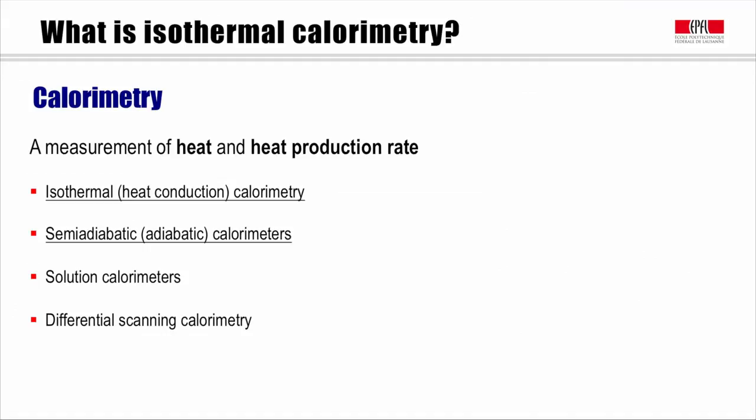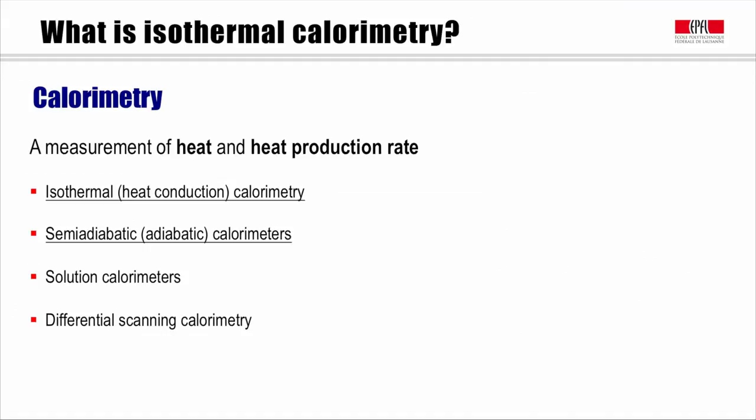The first two or three kinds of calorimeters are the most frequently used calorimetry methods. Both of them quantify hydration kinetics but the way of realizing it is different. In isothermal calorimeter, the heat production rate is directly measured. That's why it's also called heat conduction calorimetry. While in semi-adiabatic calorimetry, the sample is isolated and temperature is the signal which is recorded and later transformed to the rate of heat release.